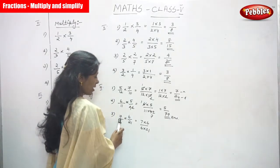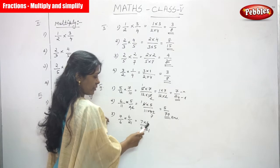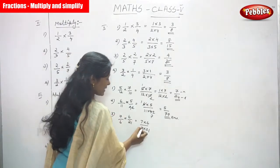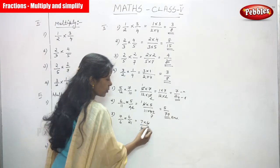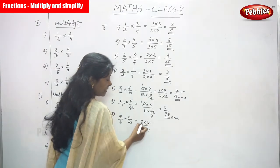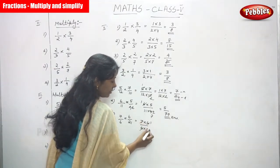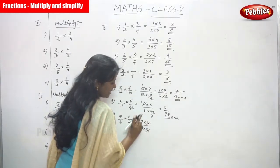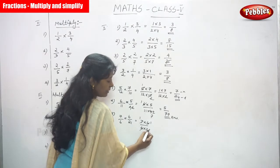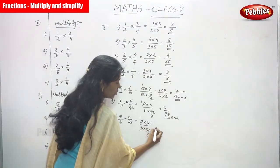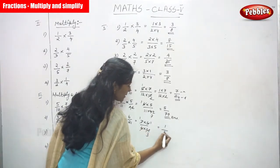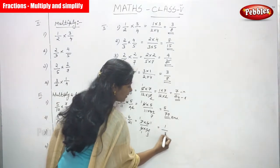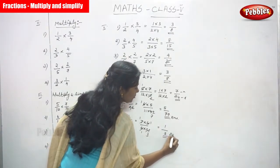We write 7 × 6 divided by 6 × 21. First, cancel 6 and 6 — you get 1. Then cancel 7 and 21: 7 ÷ 7 = 1 and 21 ÷ 7 = 3. So the numerator becomes 1 × 1 = 1 and the denominator becomes 1 × 3 = 3. The answer is 1/3.